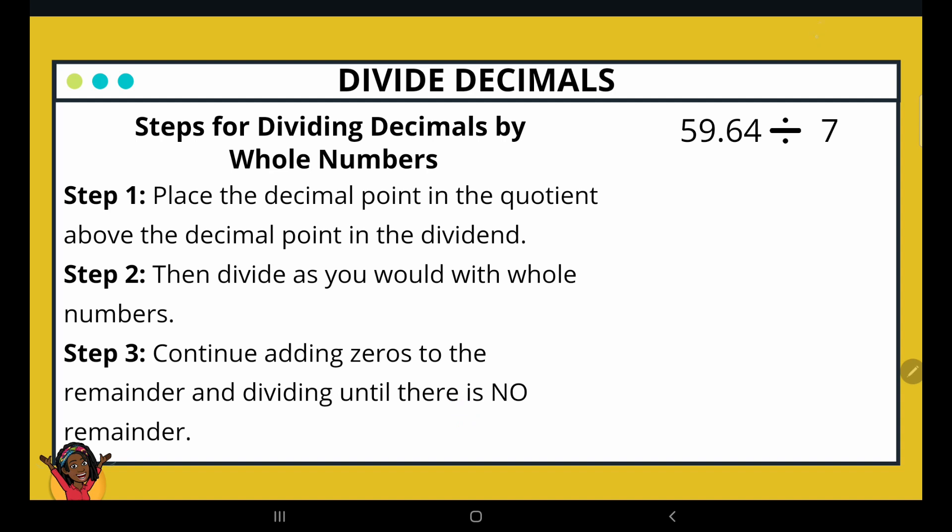So let's go ahead and set this up using our division house. Well first let's put the dividend in and the divisor out. Step 1 says, place the decimal point in the quotient above the decimal point. The decimal point is here in the dividend. I'm going to put it right on top in the quotient.